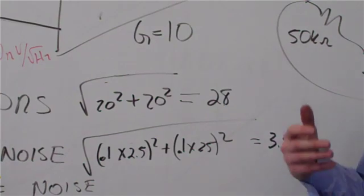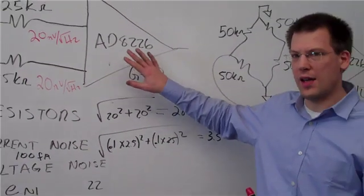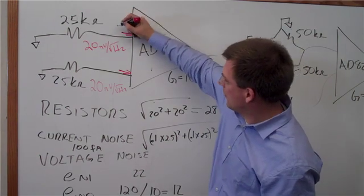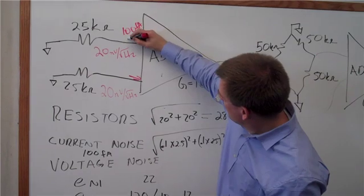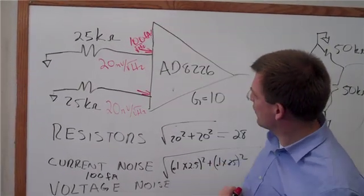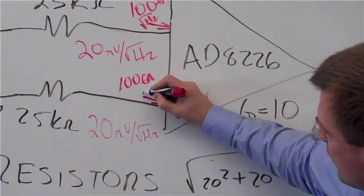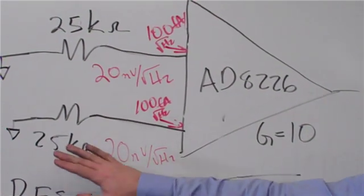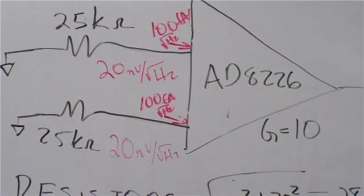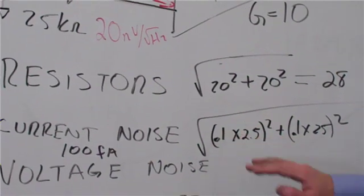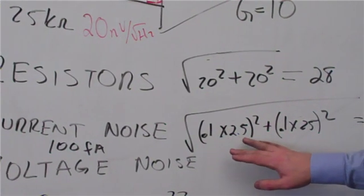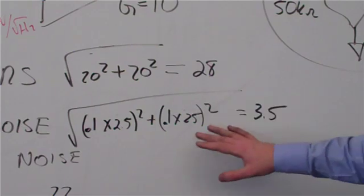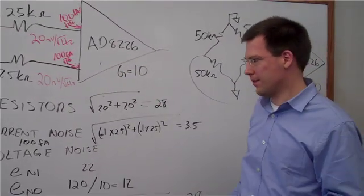The next step is to calculate the current noise of the instrumentation amplifier. We go to the datasheet of the AD8226 and find out that the current noise going into the inputs is 100 femto amps per root hertz. This 100 femto amps multiplies by the 25 kilo ohms. Converting femto to nano, 0.1 times 25 gives us 3.5 nanovolts per root hertz contribution from the current noise multiplied by the resistances.